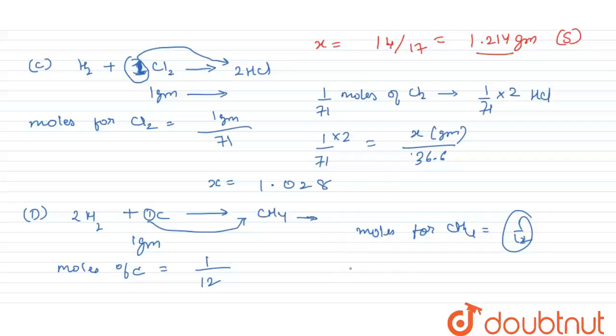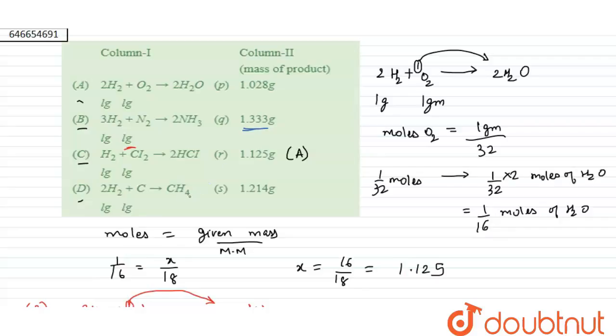Now we need to find the weight of CH4. So the moles of CH4 given are 1 upon 12, which equals X grams upon CH4 molecular weight, which is 12 plus 4, that is 16, and the value of X comes out to be 1.333.